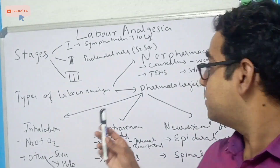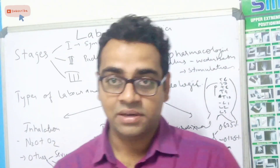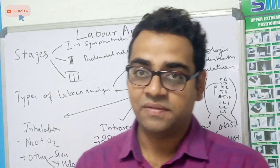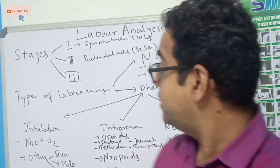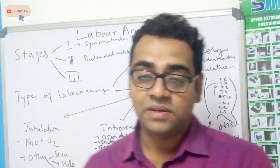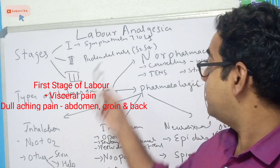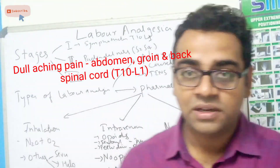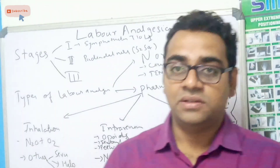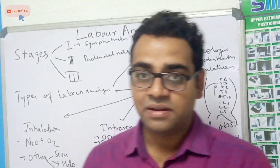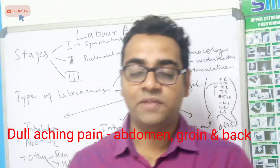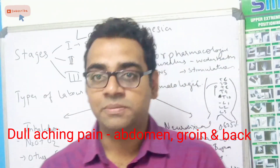Labor is the most painful condition a woman can suffer during her lifetime. There are mainly two types of pain. In stage one, the sympathetic nervous system is involved. The pain fibers are carried from T10 to L1, which supply the uterus and the pelvic organs. This is sympathetic pain — it is a dull, diffuse, non-localizing pain of sympathetic origin.